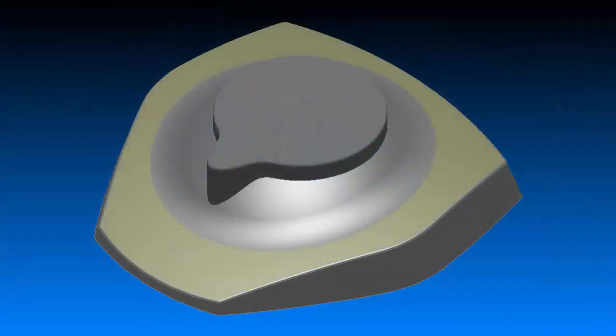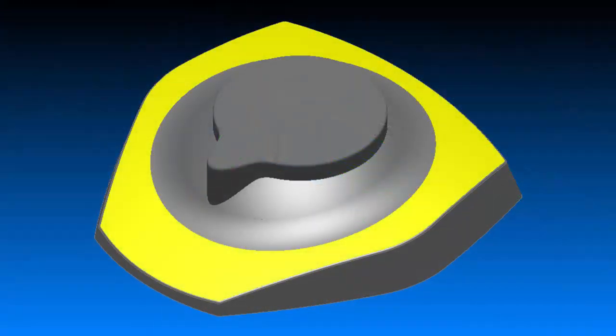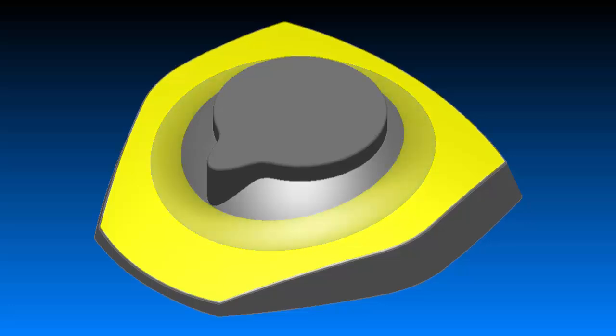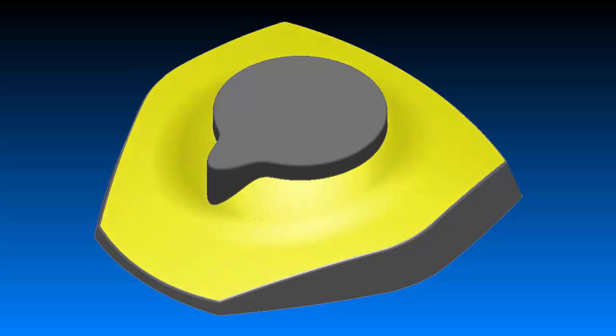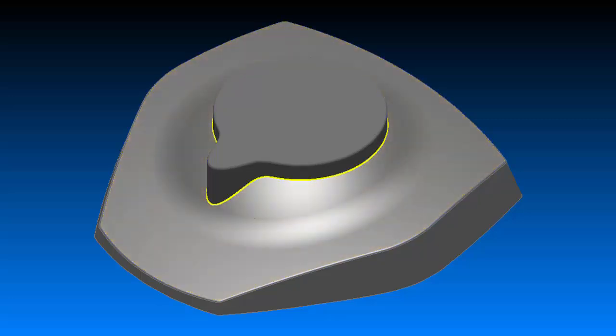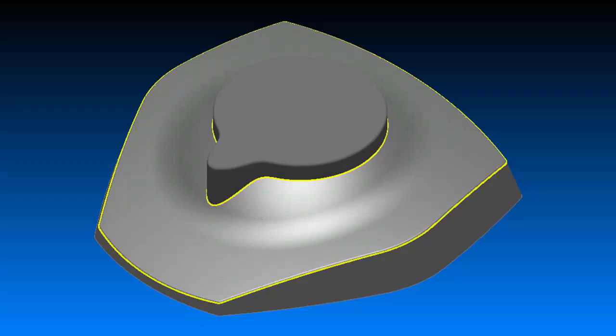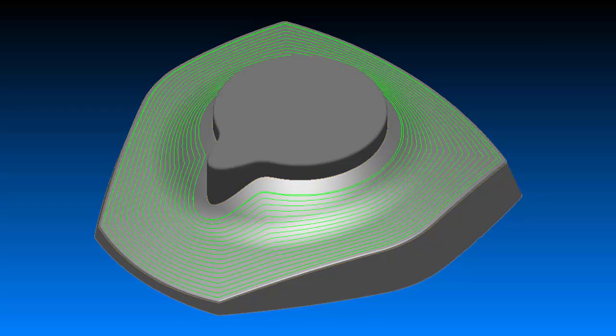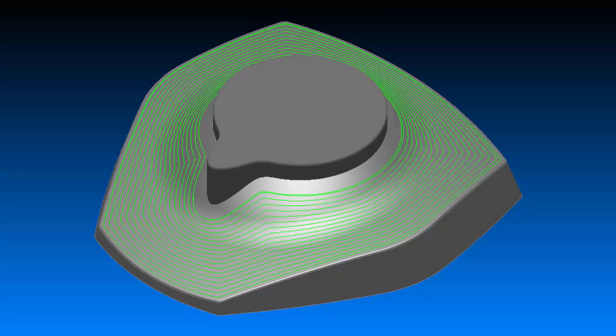One of the most versatile and often used options is the ability to morph between two curves. This powerful option allows the user to select any number of surfaces, then two curves. They do not have to be parallel or even on the same z-plane. And Surfcam will produce a smooth, flowing toolpath.